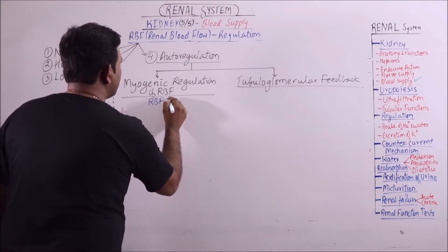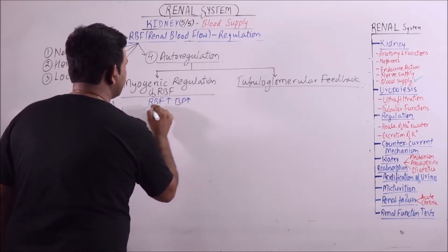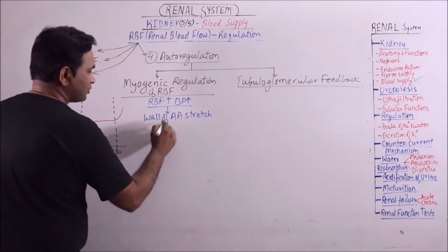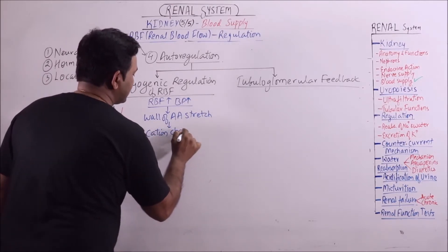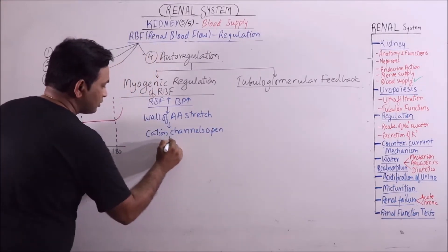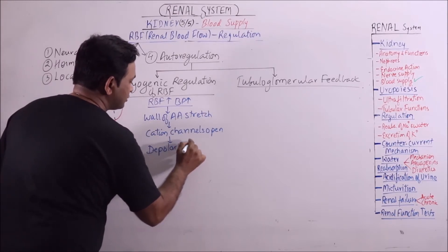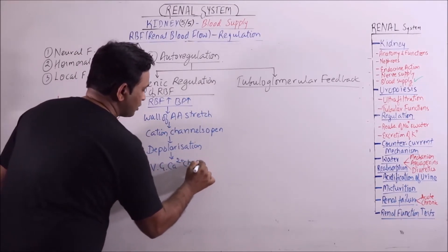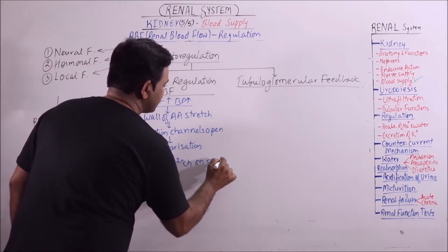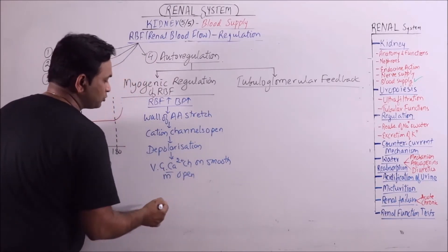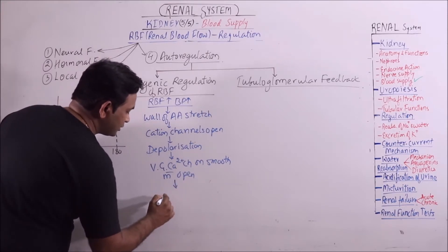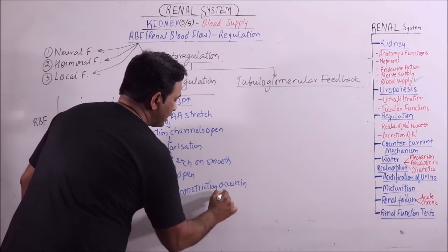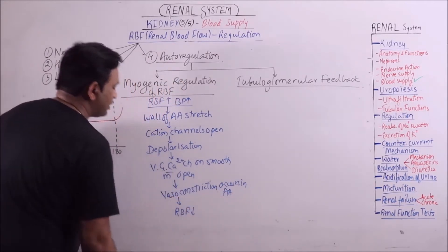How this myogenic regulation of RBF occur. When RBF increases, then blood pressure also increases. The wall of afferent arteriole gets stretched, because of which some cation channels open. This result in depolarization, and finally the voltage gated calcium channels on smooth muscle open. These smooth muscles are found in afferent arteriole and because of this vasoconstriction occurs in afferent arteriole, because of which RBF finally decreases.